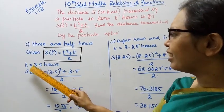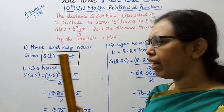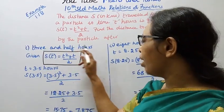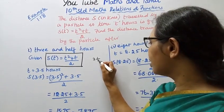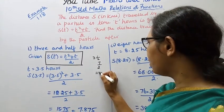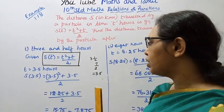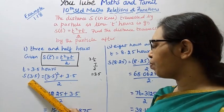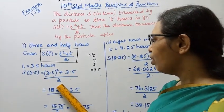We just need to find t, then substitute the value of t into the formula and we can easily get the answer. 3 and a half hours — 3 and a half means 3 twos are 6, plus 1 is 7, so 7 by 2, which gives 3.5. So t equals 3.5.